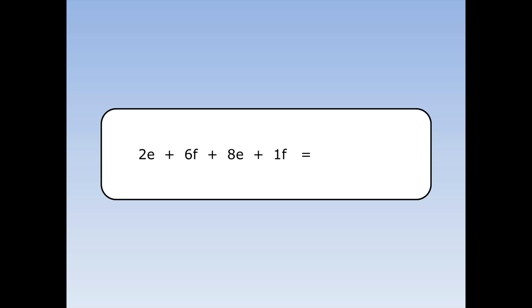Two eggs plus six fish plus eight eggs plus one fish. First, I'm going to add the eggs together. Two eggs plus eight eggs is ten eggs.